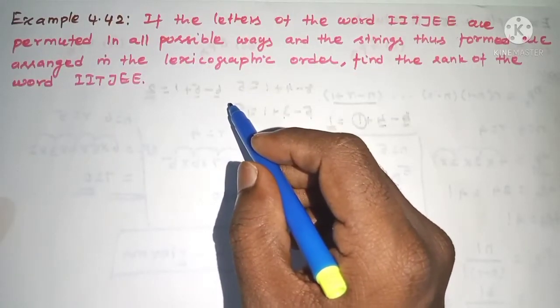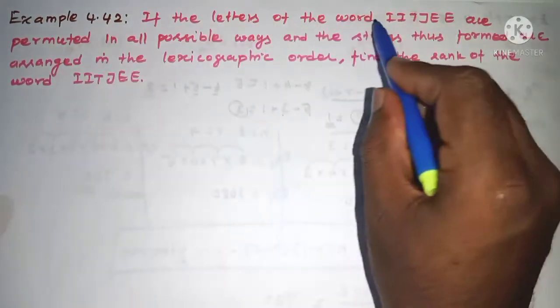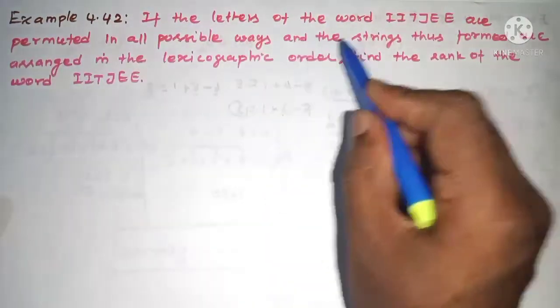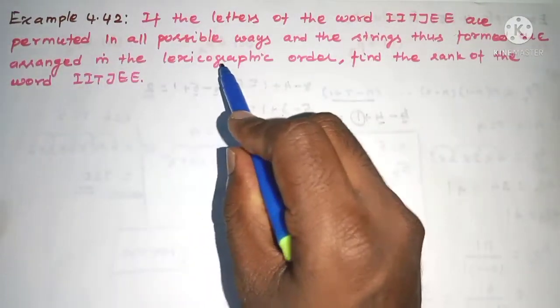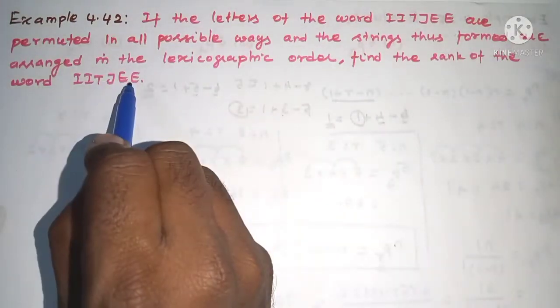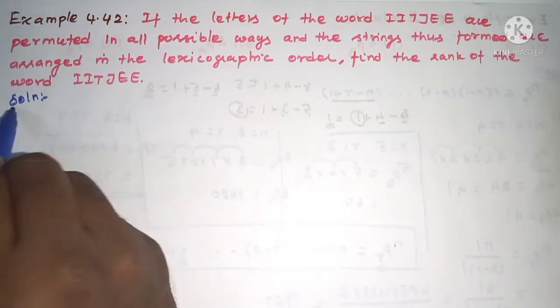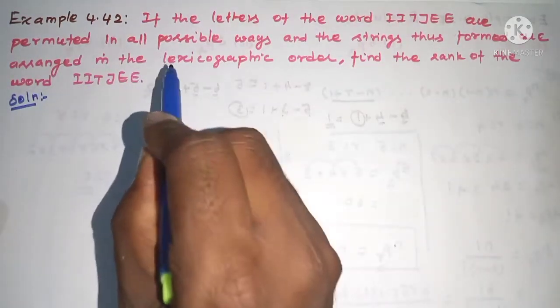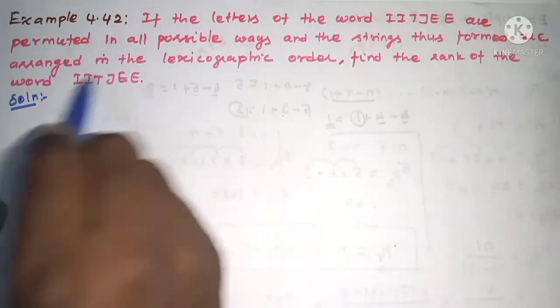Hi students, this is Cinema Max Tuition, 11th standard. Example 4.42: If the letters of the word IITJEE are permitted in all possible ways and the strings thus formed are arranged in the lexicographic order, find the rank of the word IITJEE. Okay, see the solution. Previously we found the rank when same letters repeat.